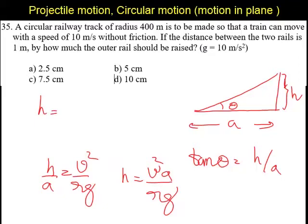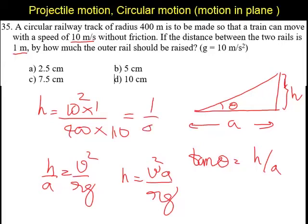v squared in this case is 10 meters, so 10 squared into a in this case, the distance between the two rails is 1. Then the radius of the track is 400 and g is 10. So 10 squared is 100, so it is going to be 1 by 40.